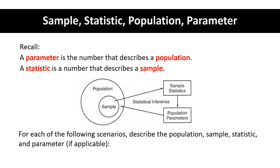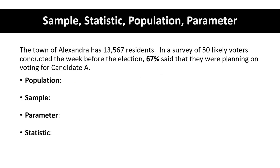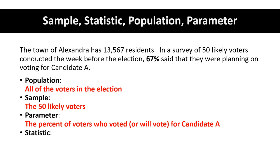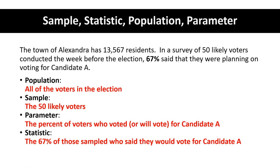For the following scenarios, describe the population, sample, statistic, and parameter. The town of Alexandria has 13,567 residents. In a survey of 50 likely voters conducted the week before the election, 67% said they were planning on voting for candidate A. The population would be all the voters in the election. The sample is the 50 likely voters from the survey. The parameter is the percentage of voters who voted or will vote for candidate A. The statistic is the 67% of those sampled who said they would vote for candidate A.